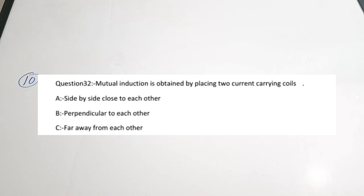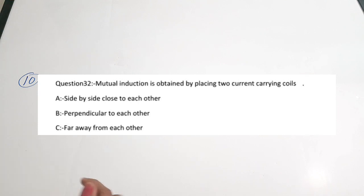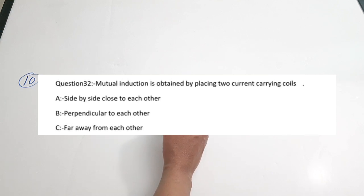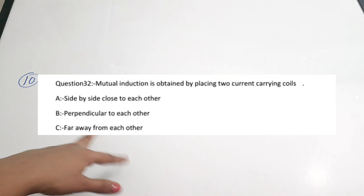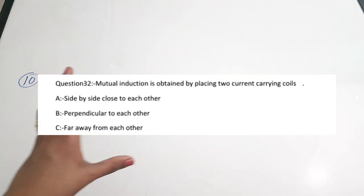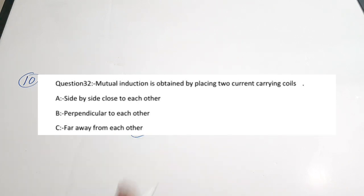Tenth question: mutual induction is obtained by placing two current-carrying coils — A) side by side close to each other, B) perpendicular to each other, C) far away from each other. When coils are placed side by side, their magnetic fields can interact, producing the mutual induction effect. Not perpendicular or far away — only side by side. Correct answer is option A.